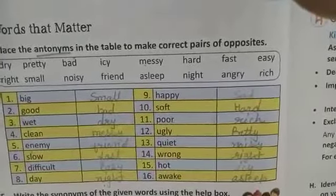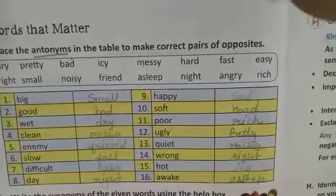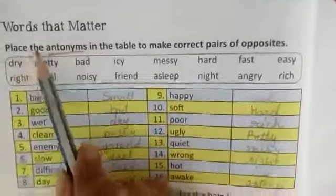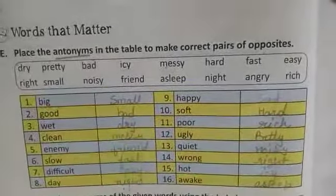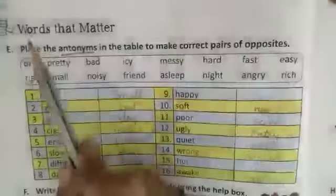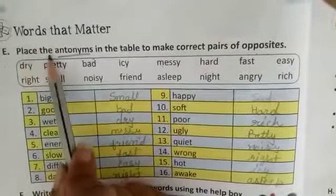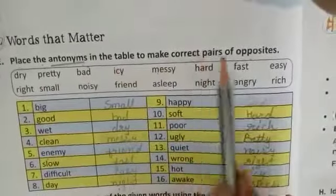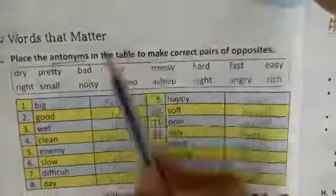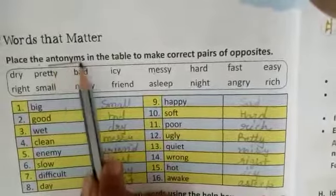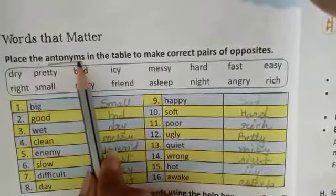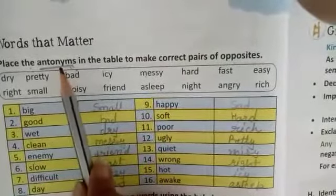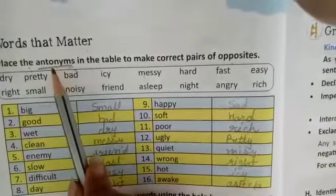Please open your book to page number 12. Now we are going to start from here. The first question is: place the antonyms in the table to make correct pairs of opposites. The word here is antonym — it means a word that means the opposite of another word.